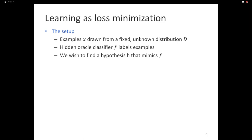We are given some examples that, for the sake of analysis only and not in practice, we'll assume are drawn from a fixed and unknown distribution. There is some oracle classifier or regressor — we'll call that F — that labels these examples. Or in general, there is a hidden function that we seek to find. Our goal is to find the function F, or at least a good enough approximation that we will call H.